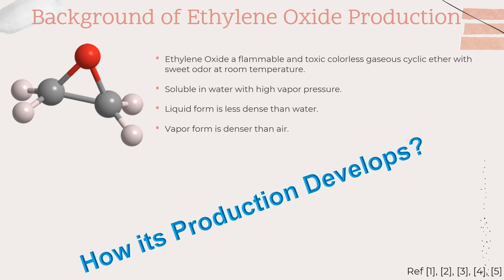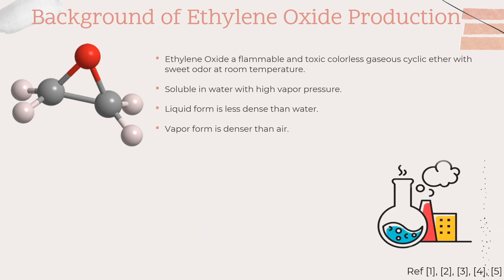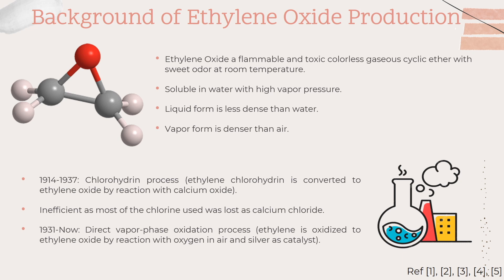The older method was developed between 1914 and 1937 — that is the chlorohydrin process — where ethylene chlorohydrin is converted to ethylene oxide by reaction with calcium oxide. The process is very inefficient as most of the chlorine used was lost as calcium chloride.